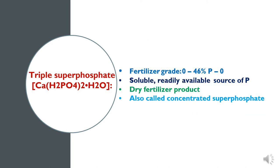The third type of water soluble Phosphatic fertilizer is triple superphosphate, which is also called concentrated superphosphate. This is a dry fertilizer product containing 46% Phosphorus in the form of P2O5, and is a soluble and readily available source of Phosphorus.